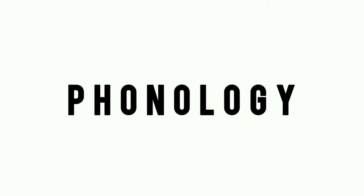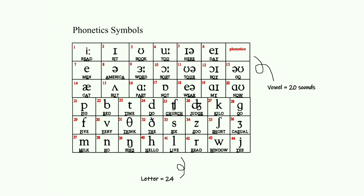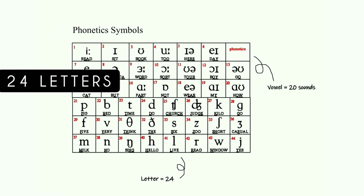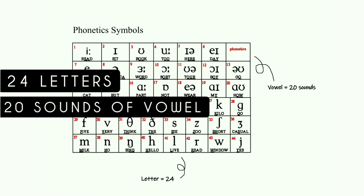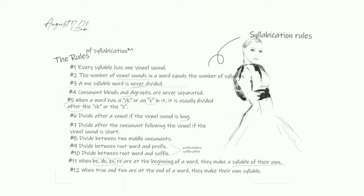Phonology. What is Phonology? Phonology is the description of the systems and patterns of speech sounds. This is a phonetic symbols table that has 24 consonants and 20 sounds of vowels. These are all of the syllabication rules that I've learned this semester.